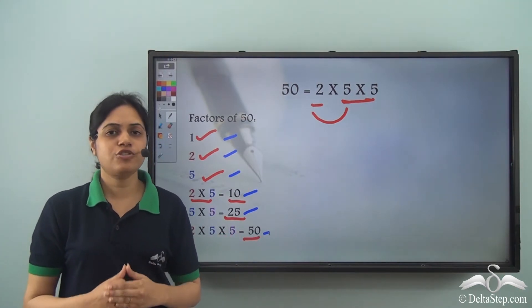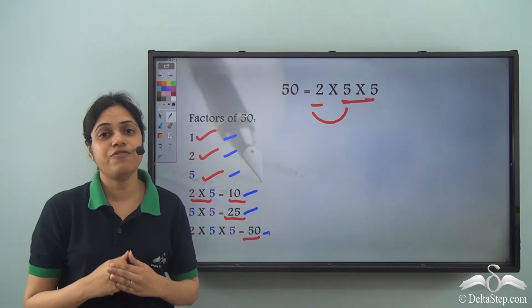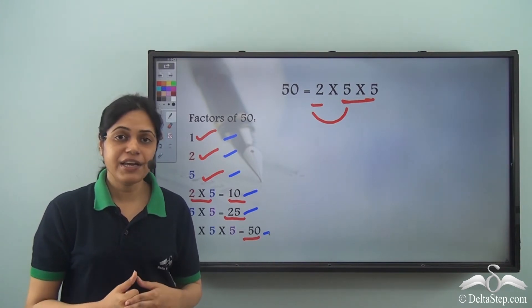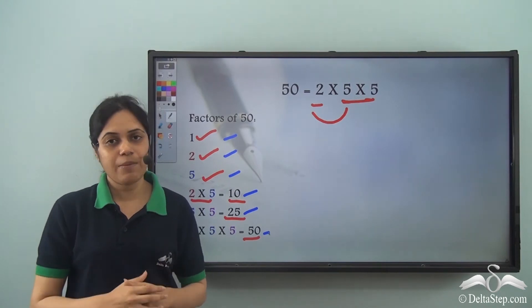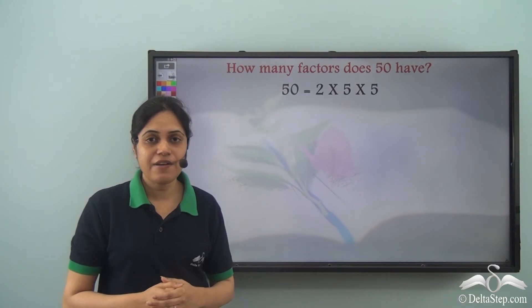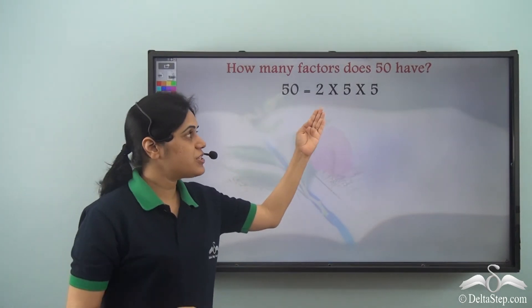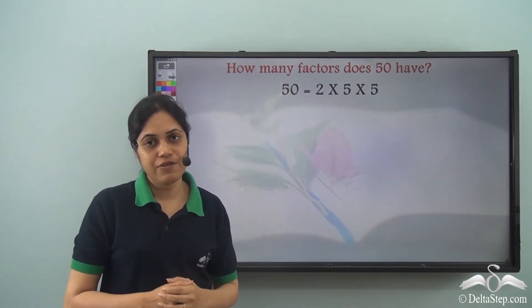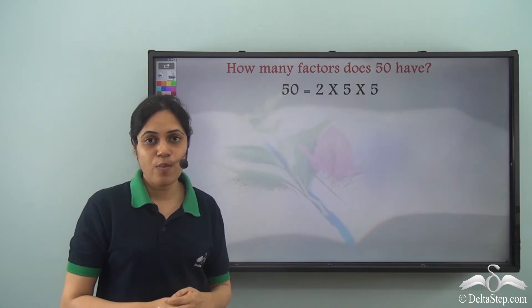So let me tell you a trick over here. This trick is very useful in finding out the number of factors which any number has. So how many factors does 50 have? Now 50 can be written as 2 into 5 into 5. This is the prime factorized form of 50.